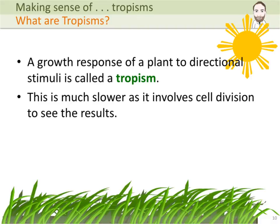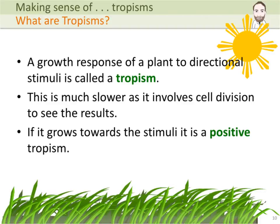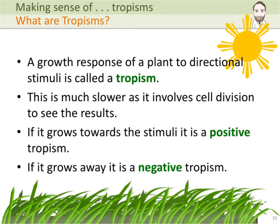It is much slower than other types of responses that some plants have, such as the Venus flytrap shutting closed, or a plant called the Mimosa pudica, which can fold its leaves very quickly when touched. This response is quite slow because it involves cell division. If it grows towards the particular stimulus, then it's called a positive tropism. And if it grows away from the stimulus, it is a negative tropism.